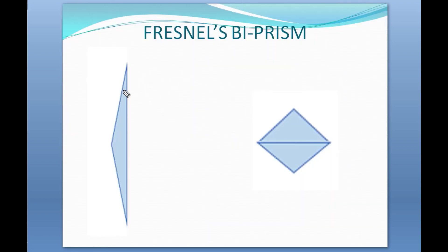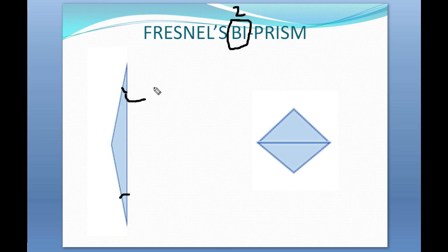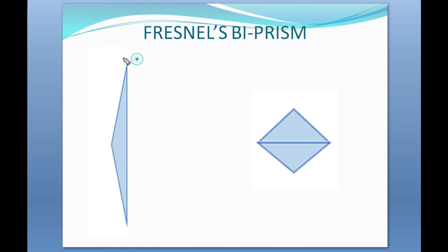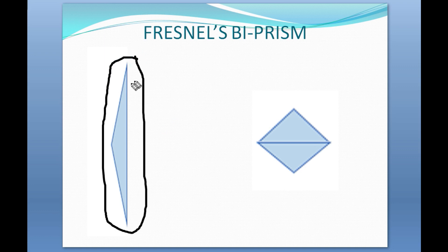Now I am going to tell you what is Fresnel's biprism. Bi means two. A prism which consists of two prisms — those two prisms are such that the two acute angles are equal to half a degree, and the obtuse angle is equal to 179 degrees. Such a prism forms a Fresnel's biprism.